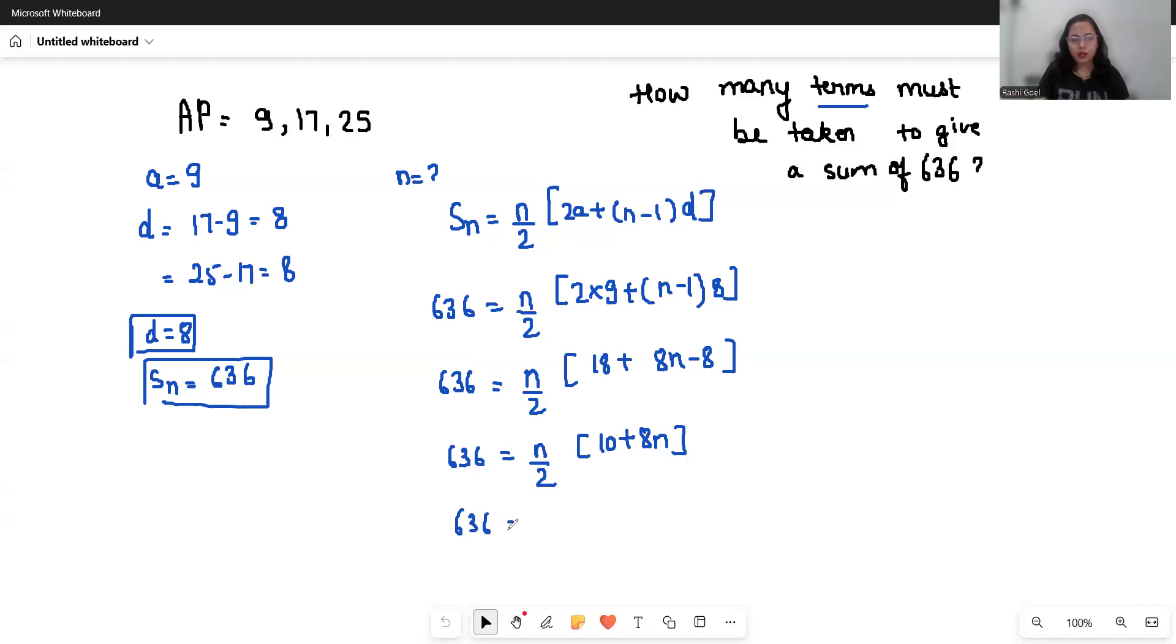Now from the bracket, if I take 2 as common, it becomes 5 plus 4n. It will cancel out. So 636 equals 5n plus 4n squared, which I can write as 4n squared plus 5n minus 636 equals 0.